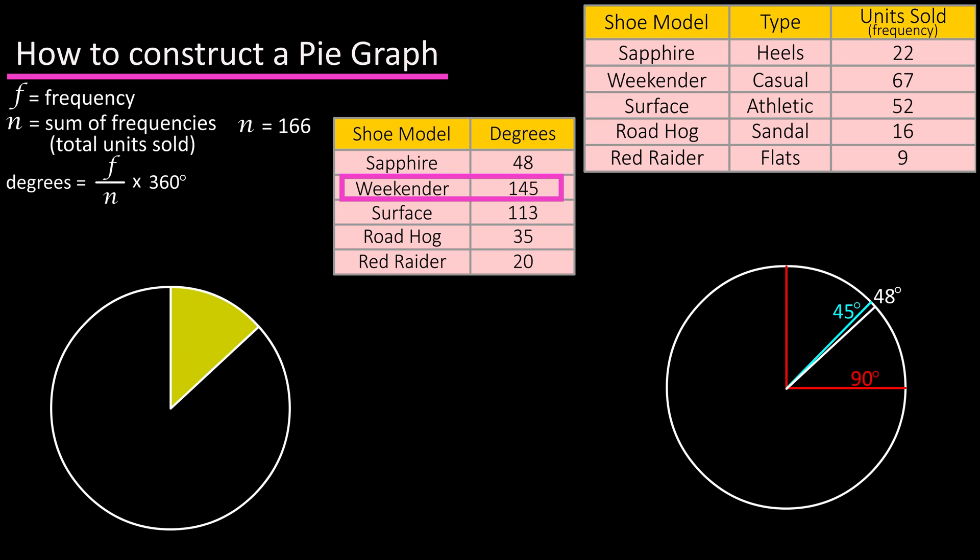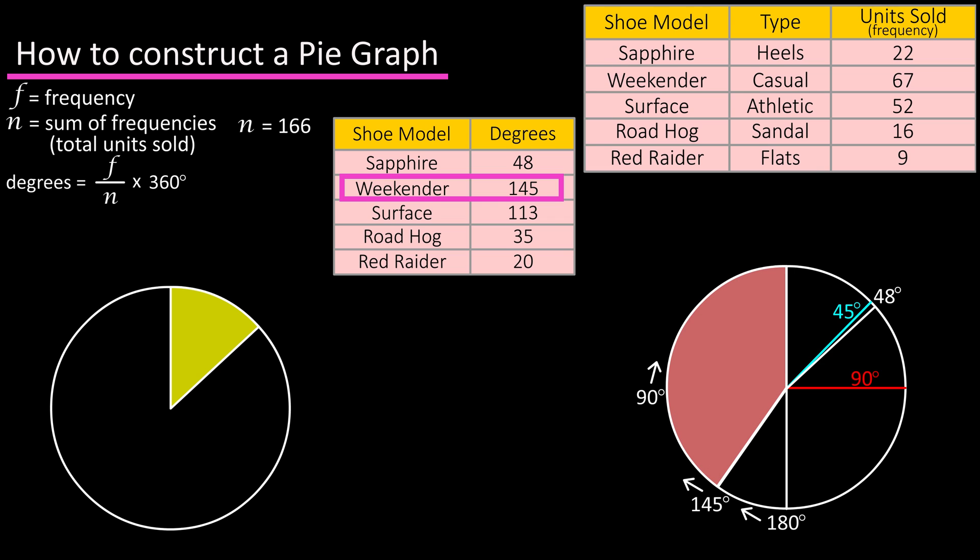Next is the weekender shoe, which has a pie slice of 145 degrees. If we extend the line out from our first pie slice all the way across the circle, we know that this is 180 degrees, and half of this is 90 degrees. A line between 180 and 90 will be 135 degrees. So we'll draw in our 145 degree line about here, and we have our second pie slice completed.